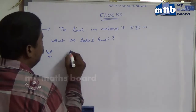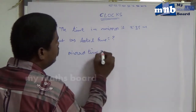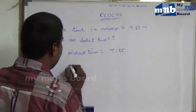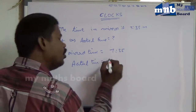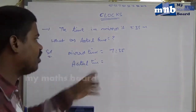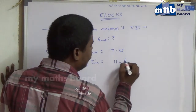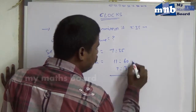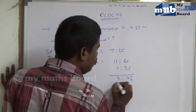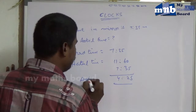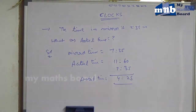So, we have to solve the mirror image. Mirror time is equal to 7:35. Actual time is equal to — subtract from 11 hours 60 minutes in the same way. 11 hours 60 minutes minus 7:35. The actual time is 4 hours 25 minutes. That is the same way.